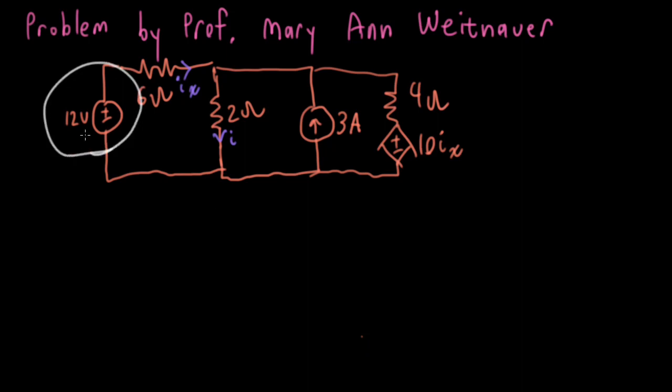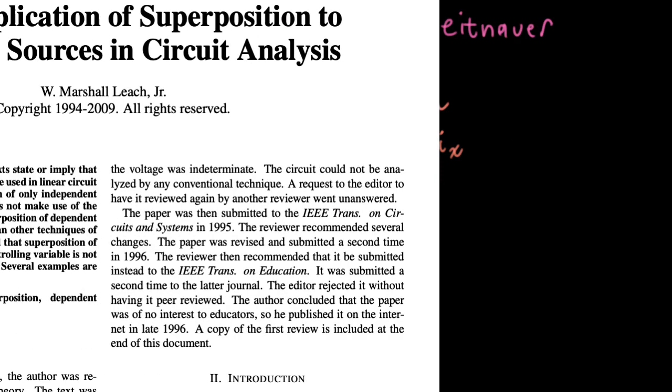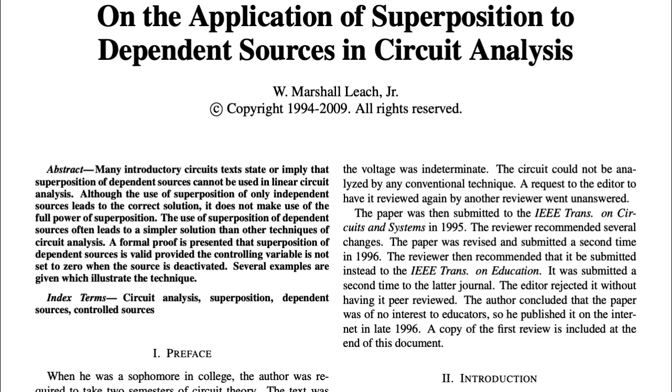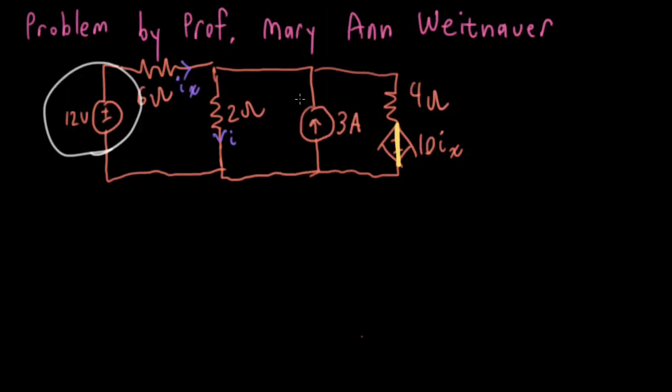Let's start by looking at the 12 volt source. I'm going to deactivate the current controlled voltage source by shorting it out, and this is the thing that the textbooks say you can't do, but Marshall Leach told me I can do it, and I believe Marshall. And I can deactivate the current source by opening it up. I'll call this case number one.